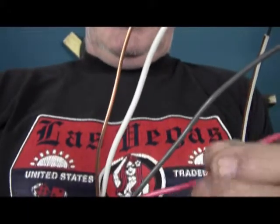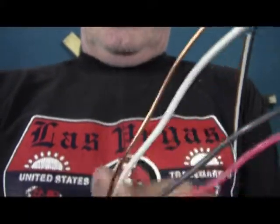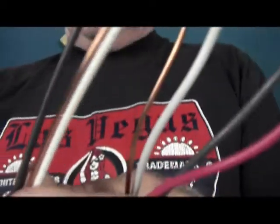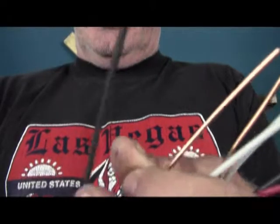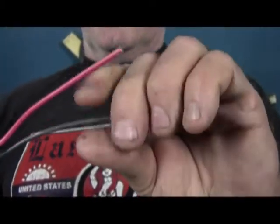This differs from 12-2, which does not have a red. It simply has a white, a ground, and a black. Now on a three-way switch, the 12-3 is used as your travelers.